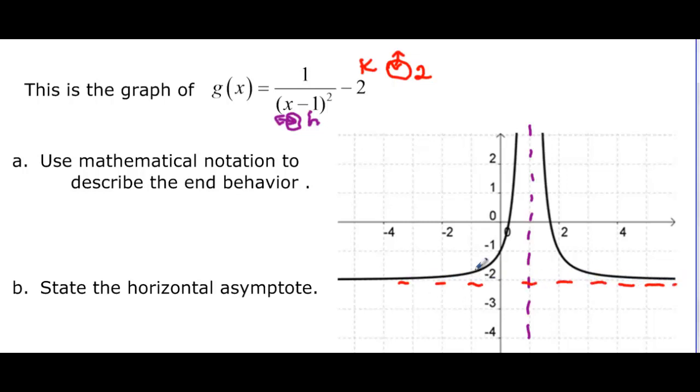And because of the program I used to make this, it looks like it's crossing that negative two, but it really isn't. It's just tending toward it. So we want to use mathematical notation to describe the end behavior, just like we did before. So we're saying, as x goes toward negative infinity, what happens to y? Well, as x goes to negative infinity, y is getting close to this negative two. So y approaches negative two.